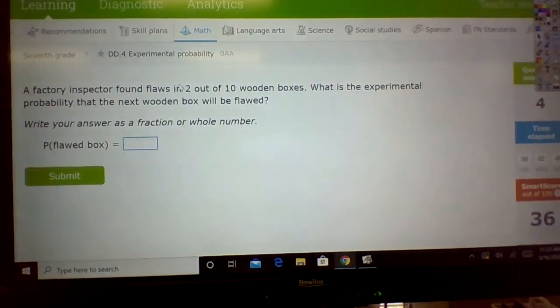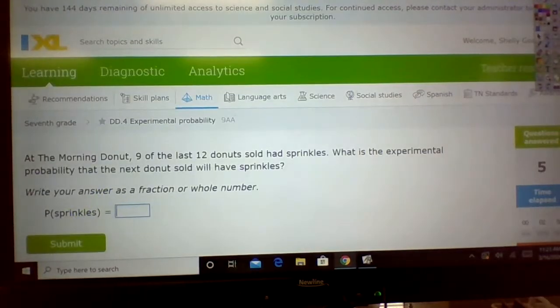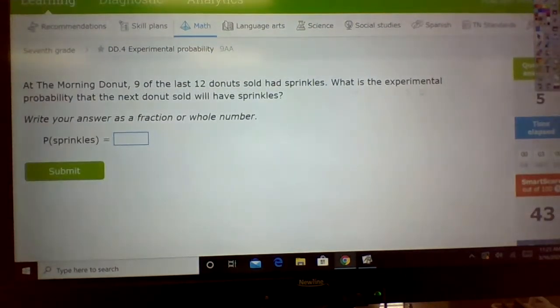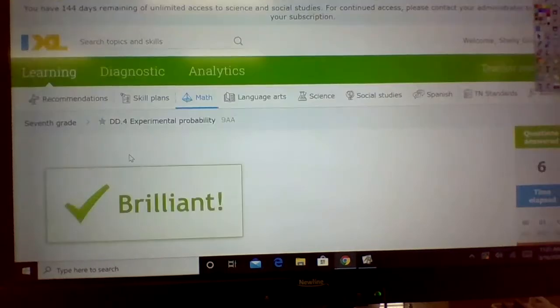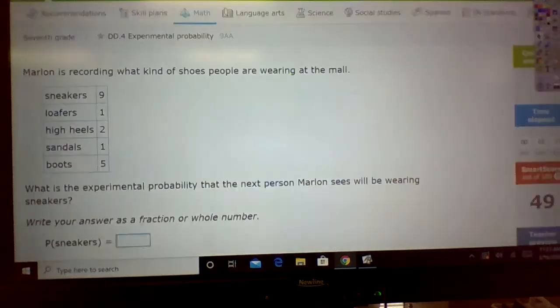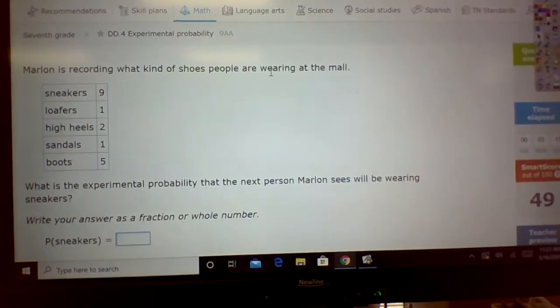The factory inspector found flaws in two of the ten. Two of the ten. At the morning donut, nine out of the twelve. Nine out of twelve. Okay, guys. This one's fairly simple. That's 49 points already. Now let's look at this.